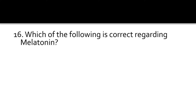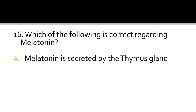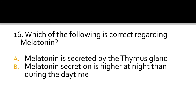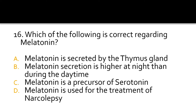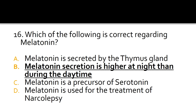Question 16. Which of the following is correct regarding melatonin? Melatonin is secreted by the thymus gland. Melatonin secretion is higher at night than during the daytime. Melatonin is a precursor of serotonin. Melatonin is used for the treatment of narcolepsy. The correct answer is B: melatonin secretion is higher at night than during the daytime.